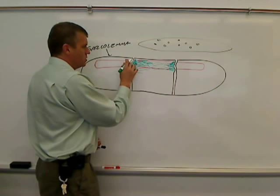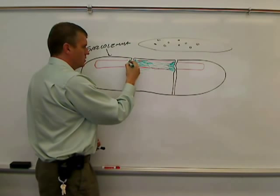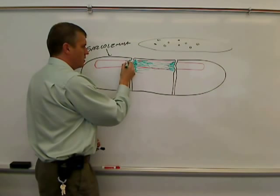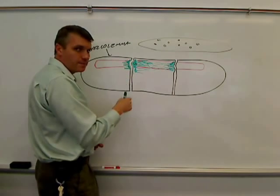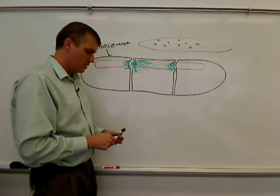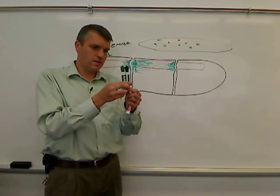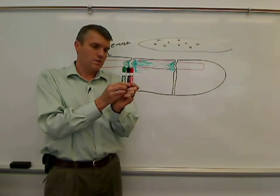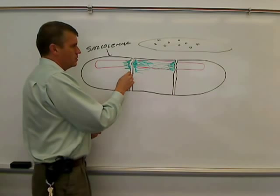Each side of each of the T-tubules will have one of these thickened areas of sarcoplasmic reticulum. Those thickened areas of the sarcoplasmic reticulum that come up to the T-tubules are called cisternae. And two cisternae, if this is the T-tubule, there's a cisternae on this side and a cisternae on that side. And that ultimately makes up three tubes. So it's called the triad.